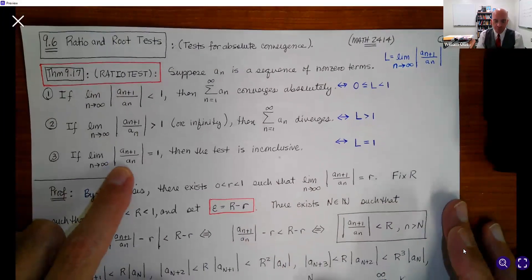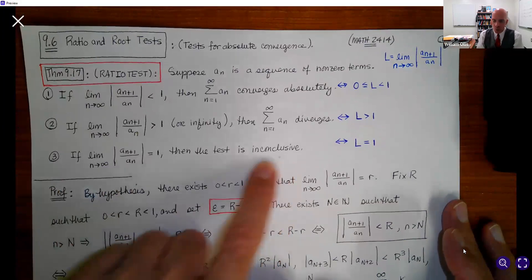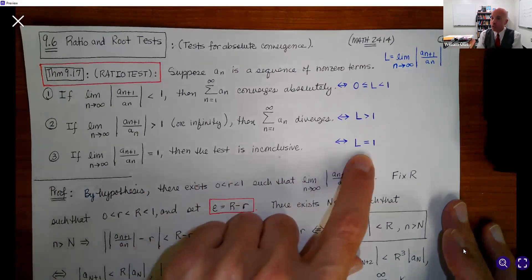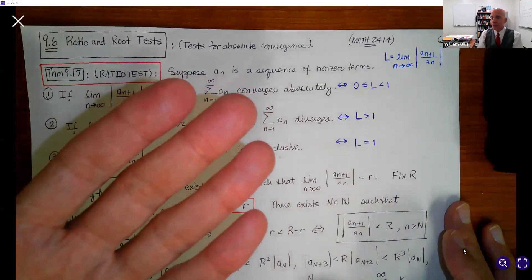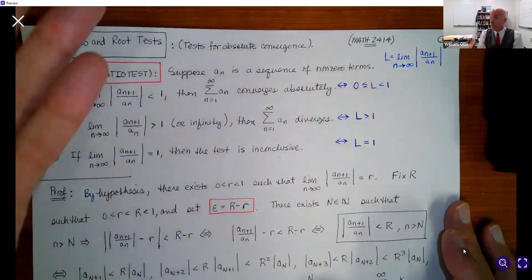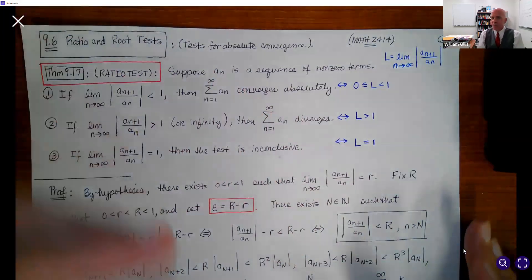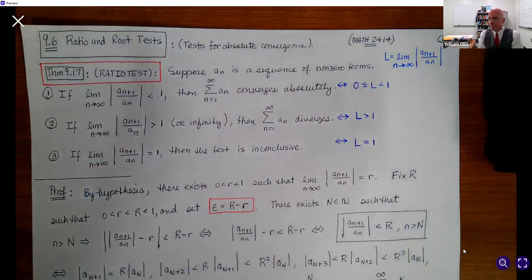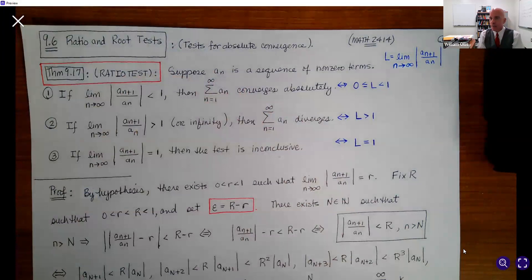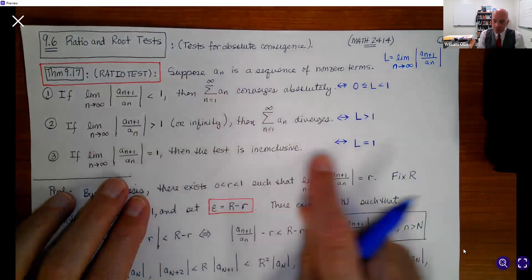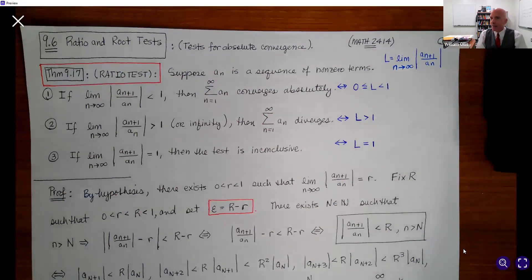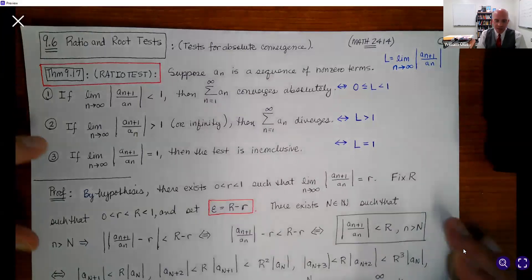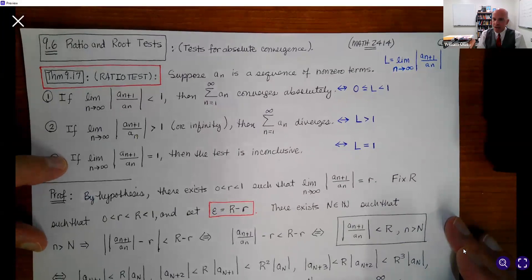The very last case is the inconclusive determination. When you get L equal to one, the test either applies or it doesn't. When you get this result, you need to try another convergence test that can apply and give you a conclusion. So that's the one drawback about the ratio test, but not a big deal.